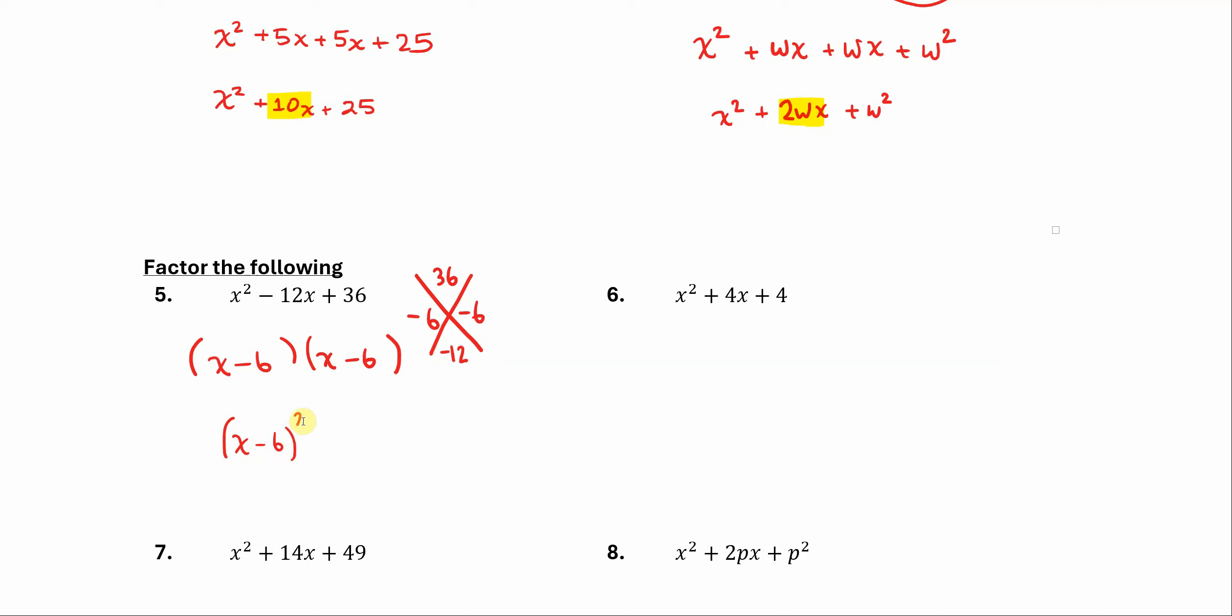And say, well, this is a quantity times itself. It's x minus 6 times itself, so that's going to be x minus 6 quantity squared. And you see here that our pattern that we had before is continuing. When we have a quantity squared, we end up with x squared. Negative 12 here is in fact twice negative 6.